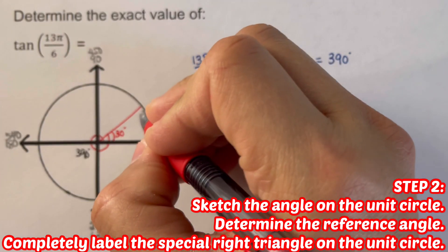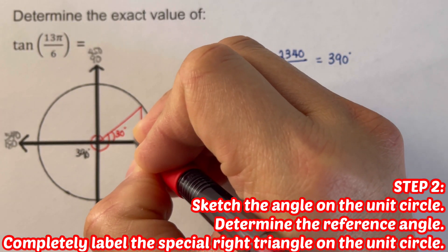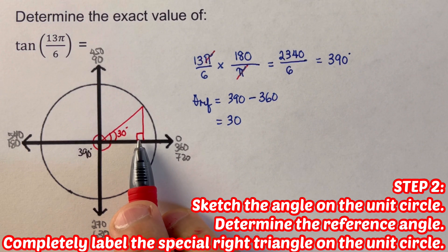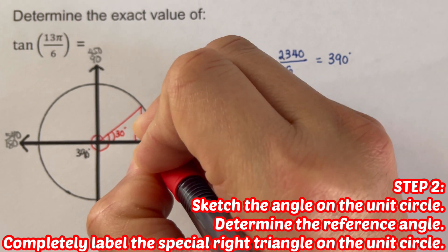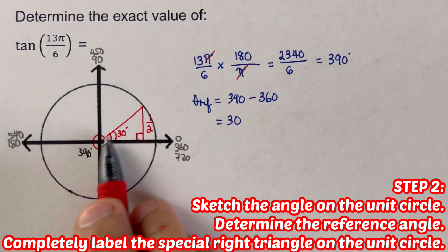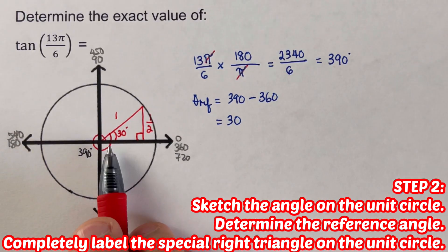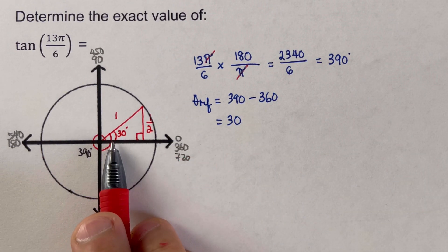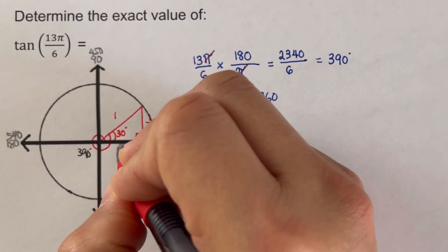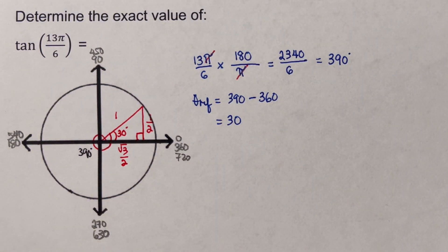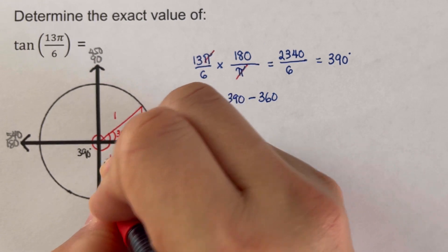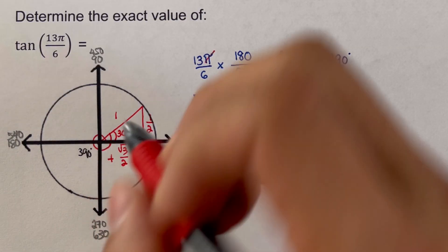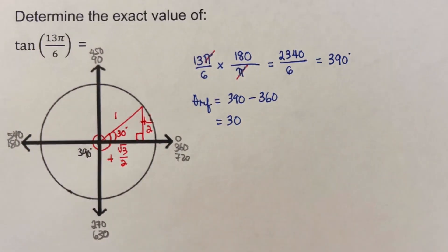Let's draw the right triangle. The right angle is here. The side across from 30 degrees is 1/2. The hypotenuse for the unit circle is 1. The side adjacent to 30 degrees is √3/2. Since this is on the positive x-axis, that side is positive, and since this is parallel to the positive y-axis, this side is also positive.